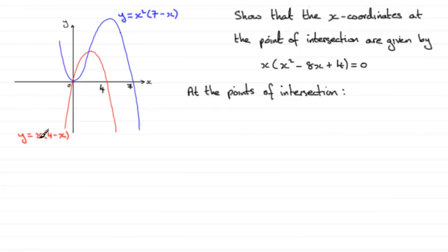So in other words, we'll say that x multiplied by (4 - x) has got to equal x² multiplied by (7 - x).